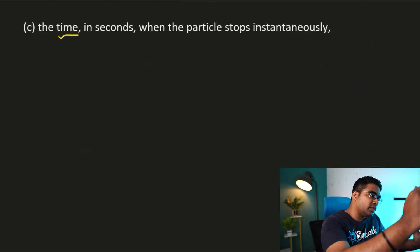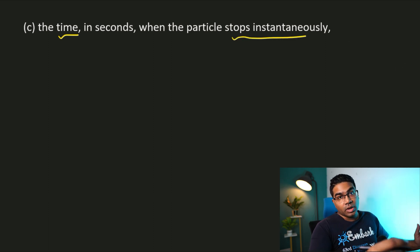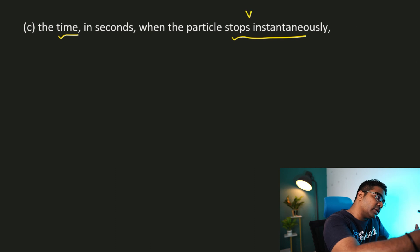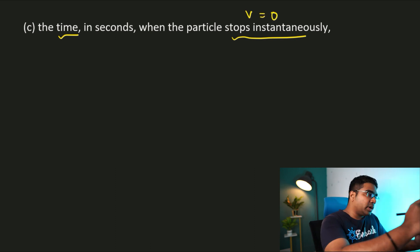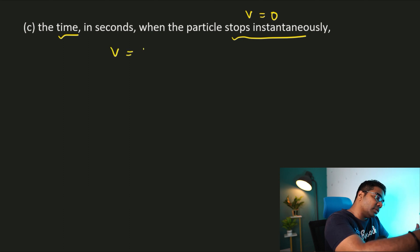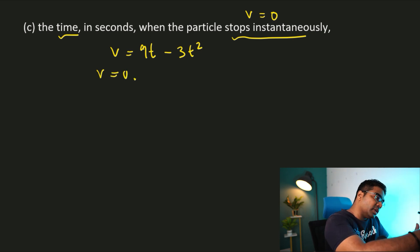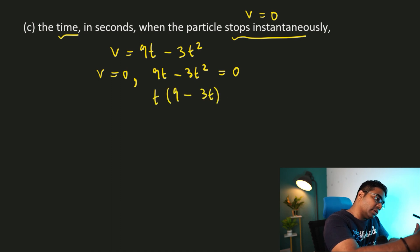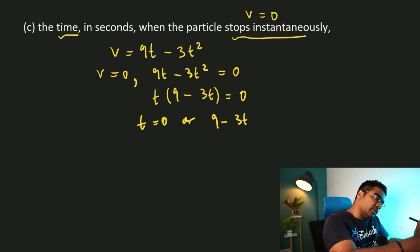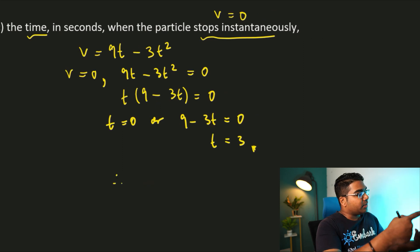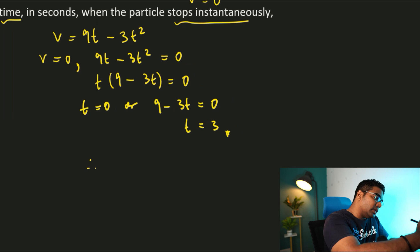Find the time in seconds when the particle stops instantaneously. Stops instantaneously means the instantaneous velocity equals 0. We already have our velocity function: v = 9t minus 3t squared. Setting v = 0 gives 9t minus 3t squared = 0, so t(9 minus 3t) = 0, meaning t = 0 or t = 3. Therefore, the time at which the particle stops instantaneously is t = 3 seconds.